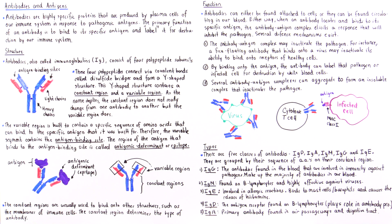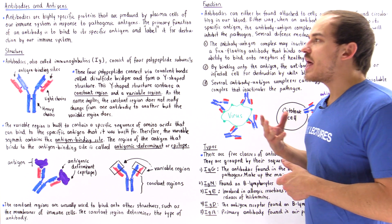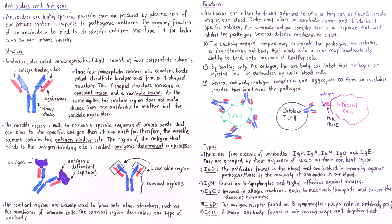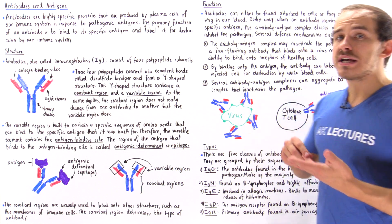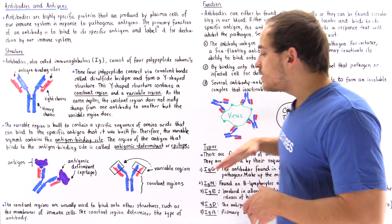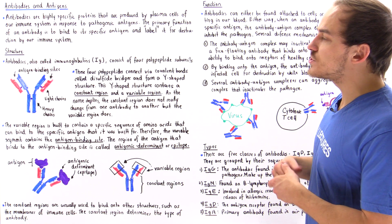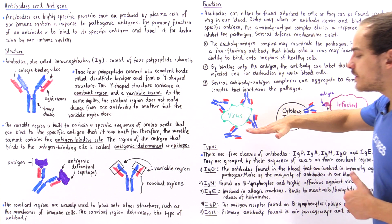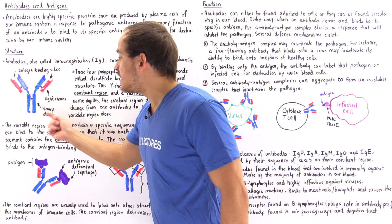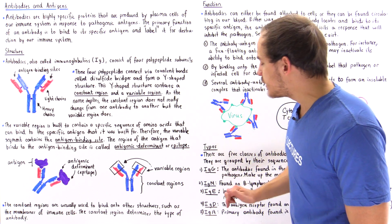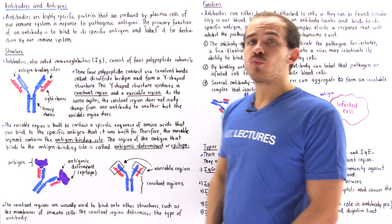Finally, immunoglobulin A (IgA) is found inside our nasal cavities, air passageways such as the trachea, bronchioles, and bronchi, as well as in our gut and digestive tract. It's also found in breast milk, in the mucous membranes along our air passageways, in our tears, and in our saliva. These are the five different types of immunoglobulin antibodies found in our body, and all of them share the same Y-shaped structure. The five classes have different sequences within their heavy chain constant regions, because it is the constant region that determines the type of antibody we are dealing with.